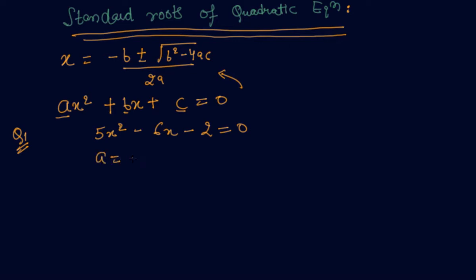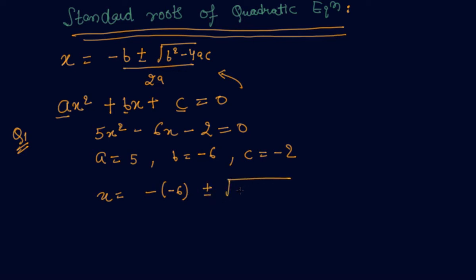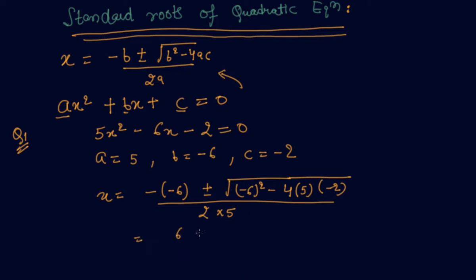The value of a here is 5, value of b is minus 6, and value of c is minus 2. Putting these values directly into the formula, we get minus of minus 6 plus minus root of minus 6 square minus 4 into 5 into minus 2, upon 2 into 5.